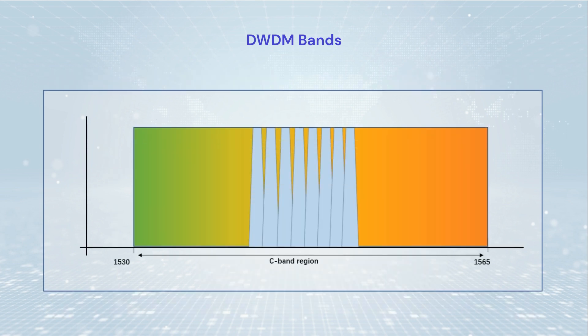DWDM has a wavelength spacing of 0.4 nm (50 GHz), 0.8 nm (100 GHz), or 1.6 nm (200 GHz).